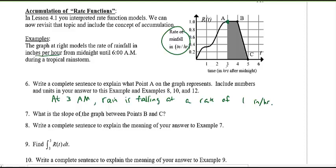For number seven, what is the slope of the graph between points B and C? Slope equals the change in y over the change in x. The change in y is −1 and the change in x is 1, giving a slope of −1. The unit of the y-axis is inches per hour and the x-axis is hours, so the slope's units are inches per hour per hour, or per hour squared. The slope represents the rate of a rate.